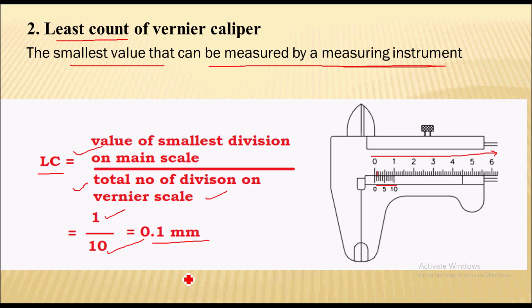So 0.1 mm is the least count of this vernier caliper, meaning 0.1 mm is the smallest possible distance that can be measured with the help of this vernier caliper.